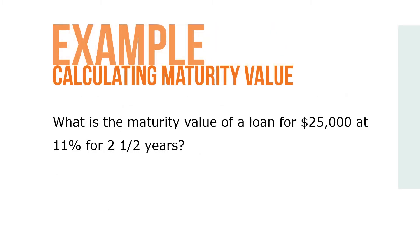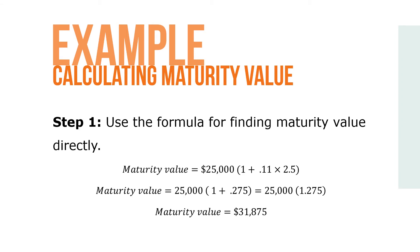Here's an example. What is the maturity value of a loan for $25,000 at 11% for two and a half years? Step 1: use the formula for finding maturity value directly. Maturity value equals 25,000 times (1 plus .11 times 2.5). So maturity value equals 25,000 times (1 plus .275), which equals 25,000 times 1.275.